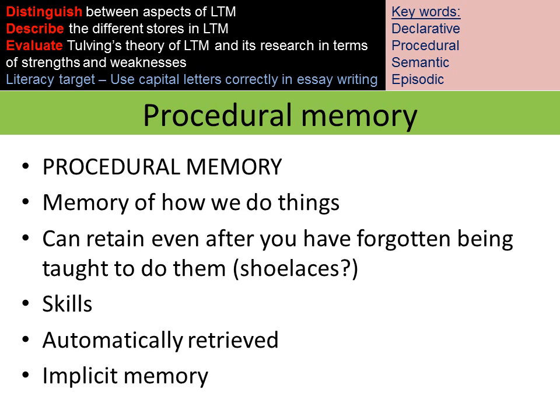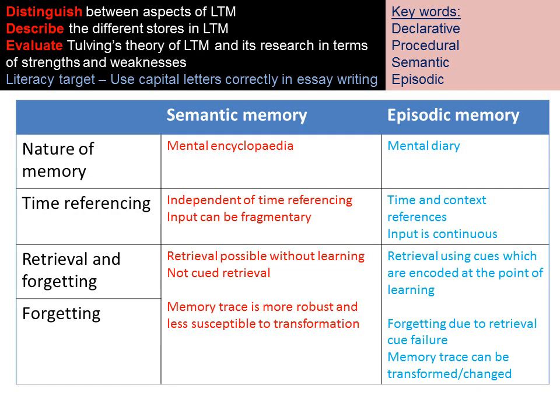Procedural memory, as mentioned, is the memory of procedures and skills — how we do things. You will remember these years and years after being taught, so for example you are taught to tie your shoelaces and can still do that 60 years later. The argument is you'll never forget how to ride a bike. These are automatically retrieved — every time you put your shoes on you don't have to consciously think about how to tie your shoelaces; it just comes naturally. This is called an implicit memory.